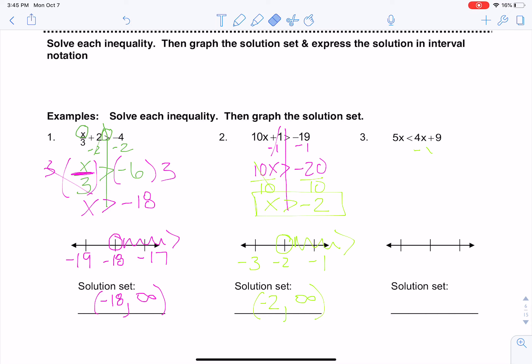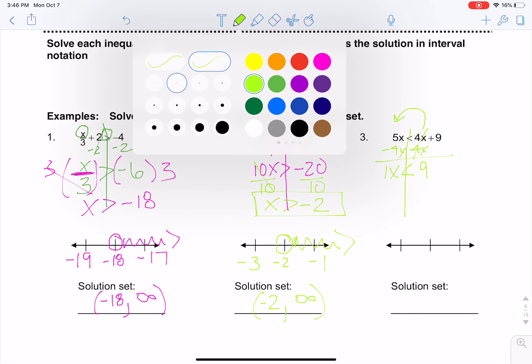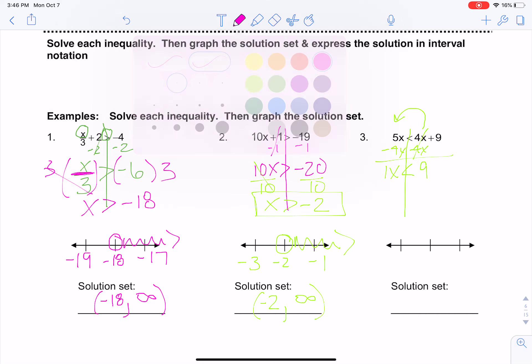Now, this next one, I have two variables. So I want to separate my sides. I want to try to get this 4x to the other side. So I'm going to do the opposite of 4x, which would be to subtract 4x on both sides. Those are gone. I'm left with 1x is less than 9. I could divide both sides by 1, but that's not necessary, is it? Because it's just going to be the same answer. So 1x is less than 9.